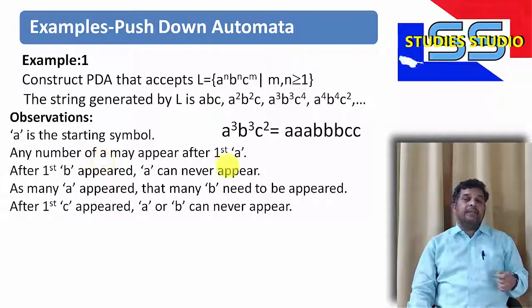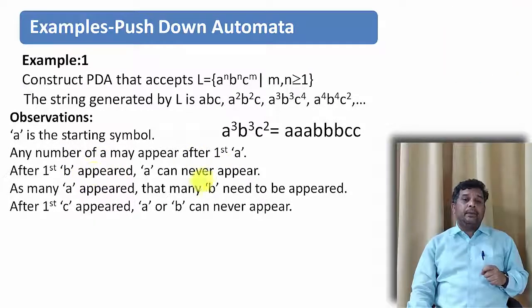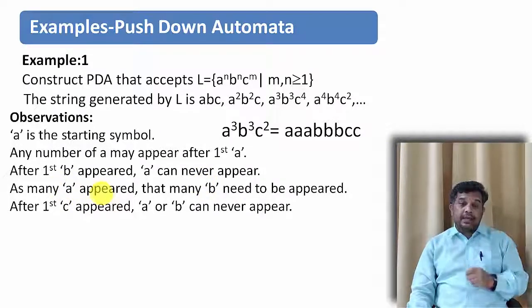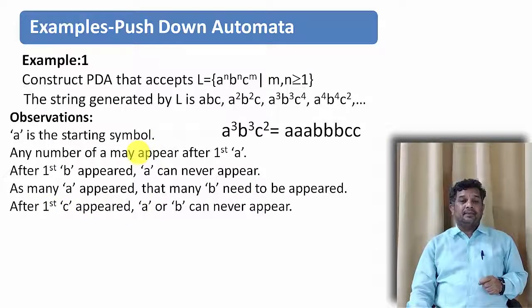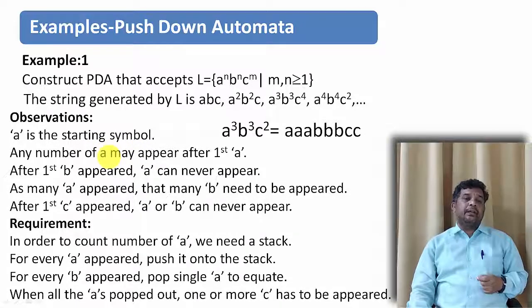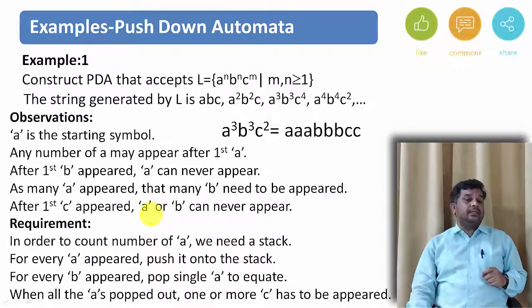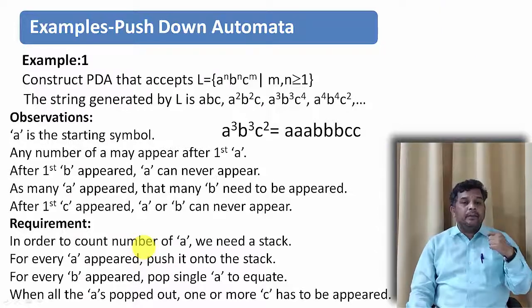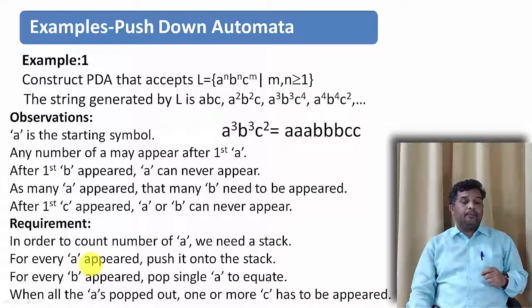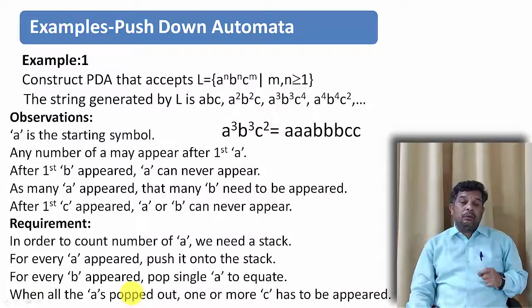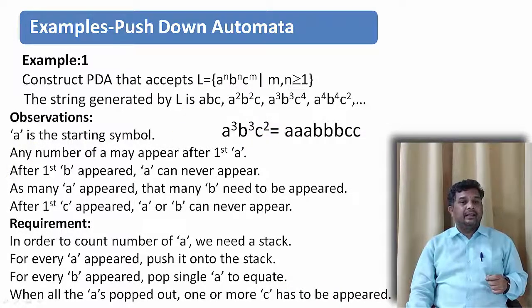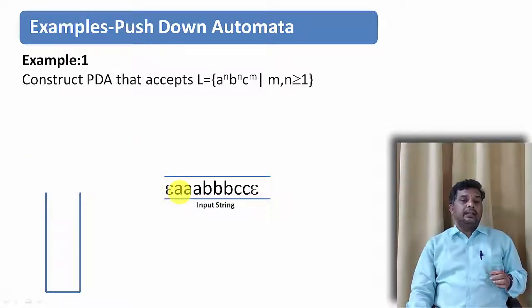Consider the string a³b³c². There are 3 a's followed by 3 b's followed by 2 c's. The observation: a is the starting symbol. After the first a, more a's can appear. When the first b appears, a can never appear after that. As many a's as there are, that many b's need to appear. After the first c, neither a nor b can appear.